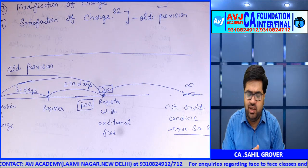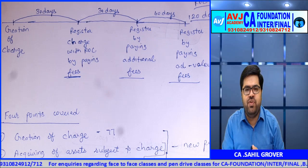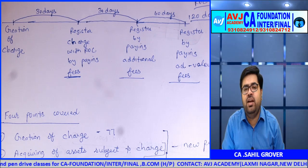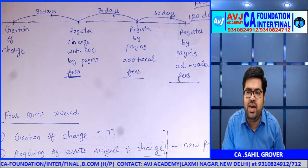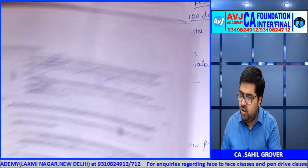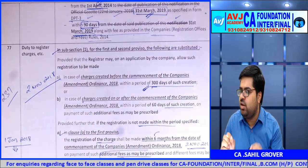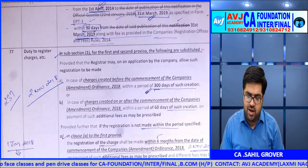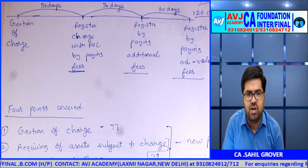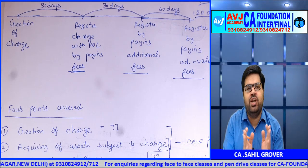Now this rule has been completely changed. Under the amended Section 77, two separate rules have been created: first, for charges created after the Companies Amendment Ordinance 2018 (i.e., after 2nd November 2018), and second, for charges created before that date. This amendment came through the Companies Amendment Ordinance 2018, which commenced on 2nd November 2018 — that is your cut-off date. The general rule of 30 days from creation still applies.